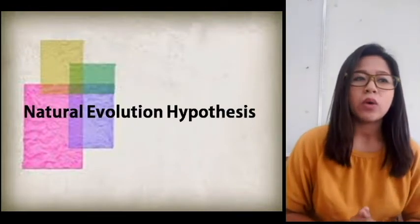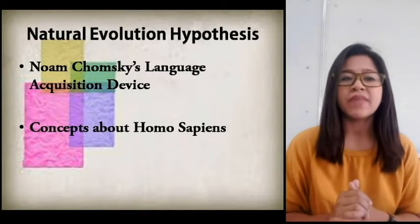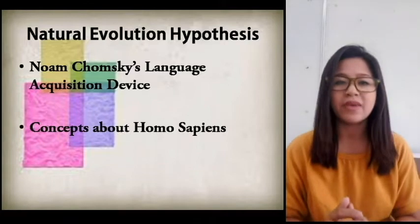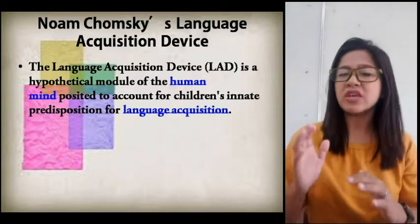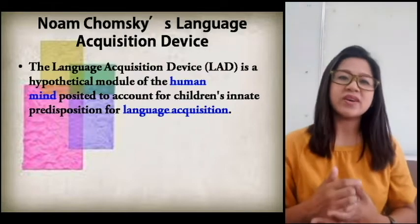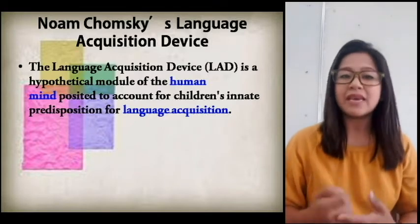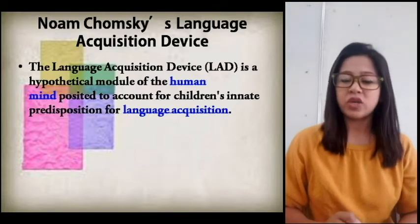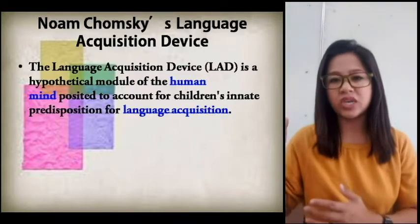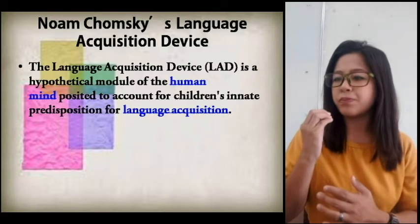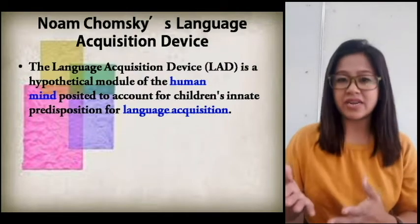Now, for the natural evolution hypothesis, we have two concepts that will support this one. One is Noam Chomsky's language acquisition device, and the other one is the concepts about Homo sapiens. Chomsky's language acquisition device, or LAD, is very famous, especially if you're an English major student or an English teacher. It tells us that it is a hypothetical module of the human mind proposed to account for children's innate predisposition for language acquisition. There is a part of our brain responsible for the generation of our language — a tool in our body, specifically in our brain, used in order for us to learn language.